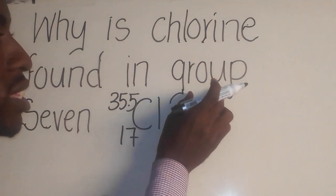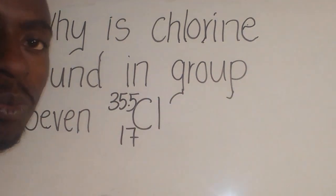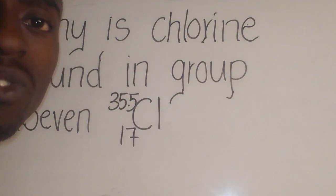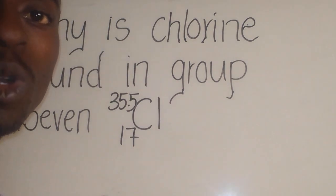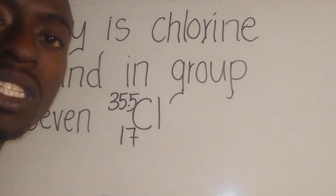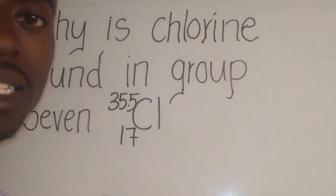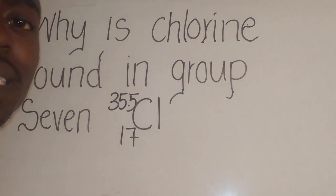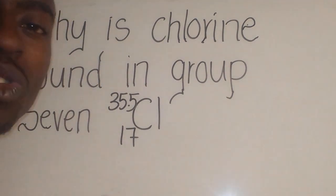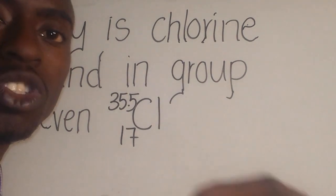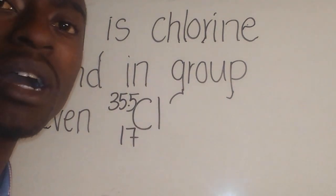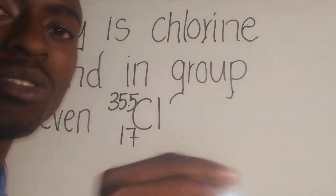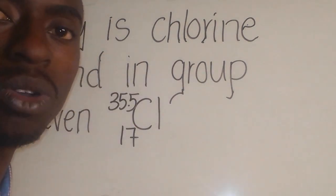You need to understand that when they say a group, groups are vertical lines on the periodic table. Basically, we have 8 groups on the periodic table — others say 18, it is the same. The determination of where an element belongs in a group is determined by the number of electrons in the outermost shell.